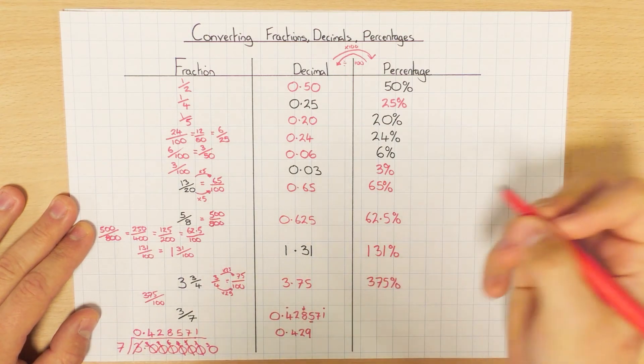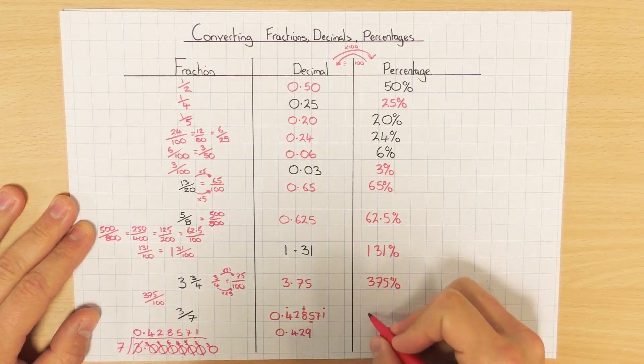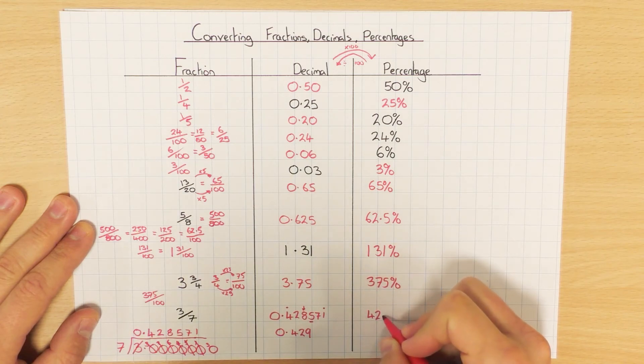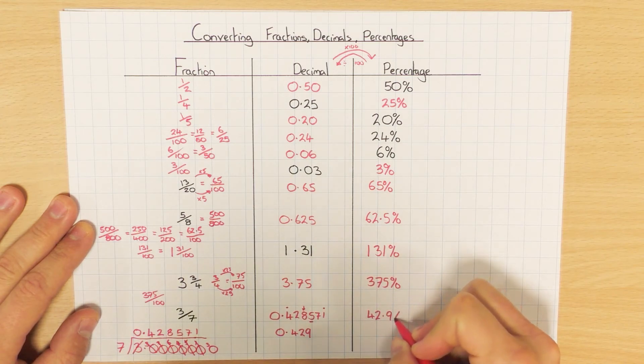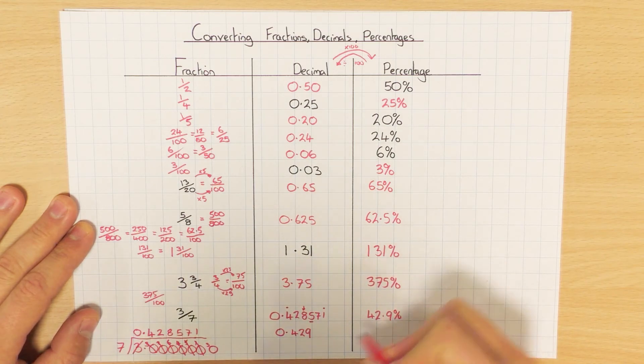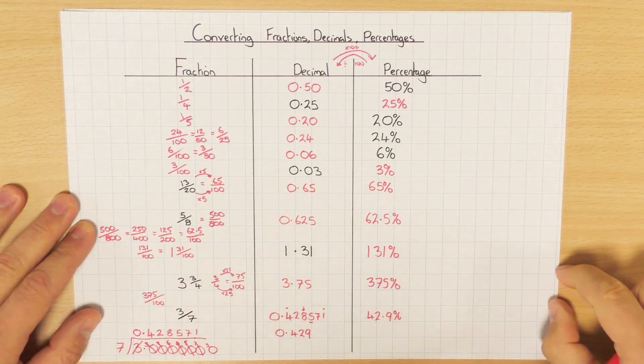Of course, you'd then times it by 100 to get 42.9%, but of course that would have been rounded.